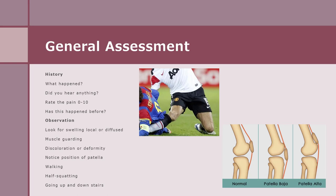Hyperextension, or posterior bowing of the knee, is called genu recurvatum. In the knee, we also have the patella, a bone suspended in the patellar ligament. Patella abnormalities include: patella alta, a high-riding patella caused by a long patella tendon; patella baja, a low-riding patella caused by a shortened patella tendon; squinting patella, a medial-riding patella caused by hip anteversion, internal rotation of the femur, or internal tibial rotation; and frog-eyed patella, a lateral-riding patella caused by hip retroversion, external rotation of the femur, or external rotation of the tibia.